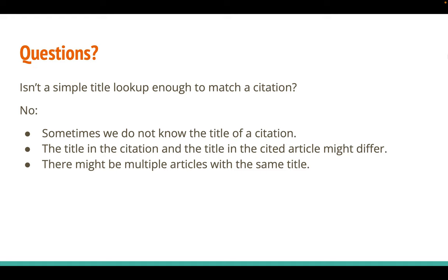You might also think that it is enough to just do a simple title lookup to match a citation, but the reality is much more complicated. First of all, we don't always know the exact title of a citation — the title may be buried inside the formatted citation. Secondly, quite often the title in the citation and the title in the cited article differ. There might be differences related to how this information was extracted or submitted, there might be typos or errors. And finally, the same title might be shared among several articles, either just by chance or because we have different versions of the same article. In general, simple and naive approaches sound promising, but when you look more closely at the messy and complex data, they are just not good enough.